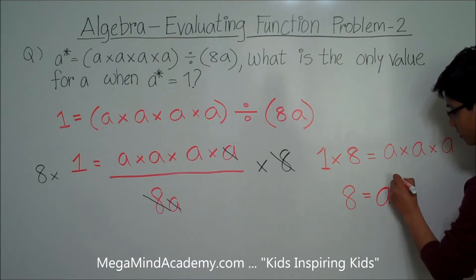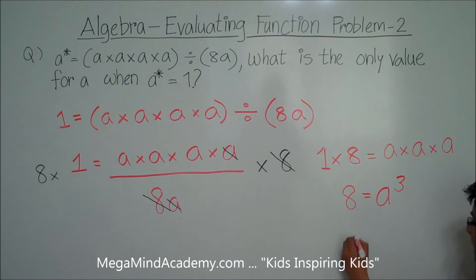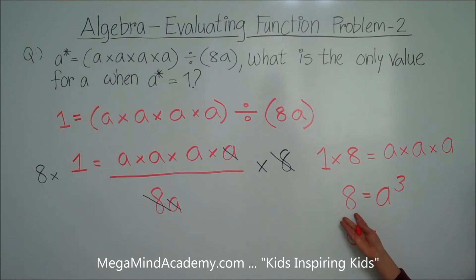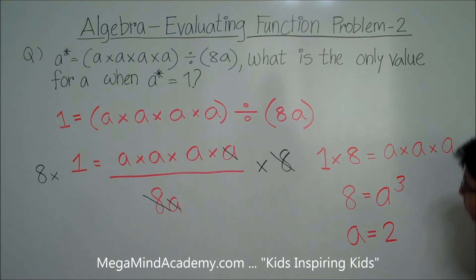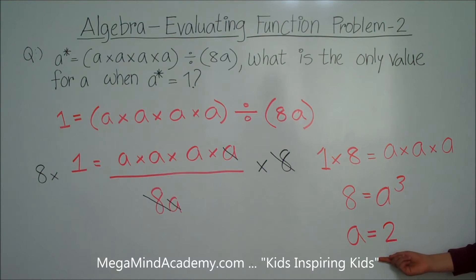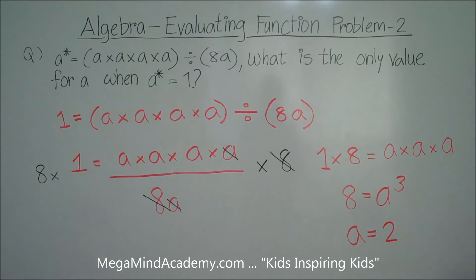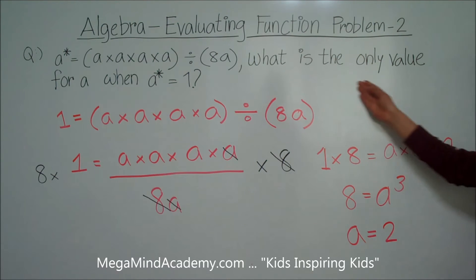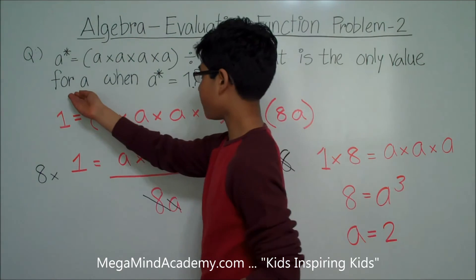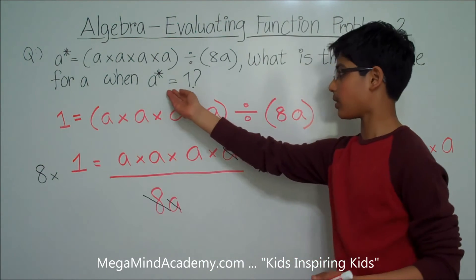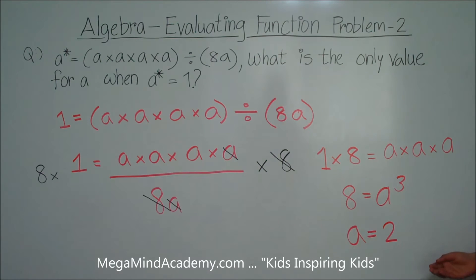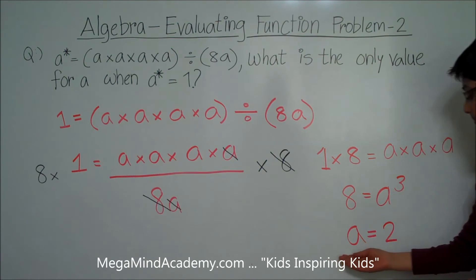So a cubed equals 8, which means a is equal to the cube root of 8, which is 2. The cube root of 8 is 2 because 2 times 2 times 2 is equal to 8. So the answer to this problem — what is the only value for a when a asterisk is equal to 1? — the only value for a is 2.